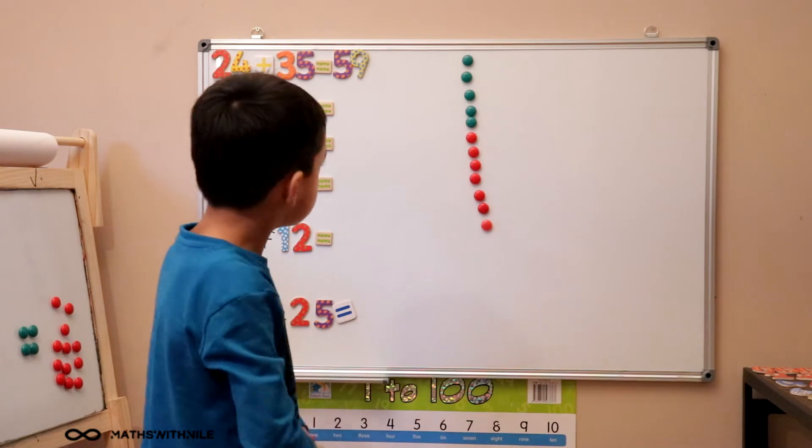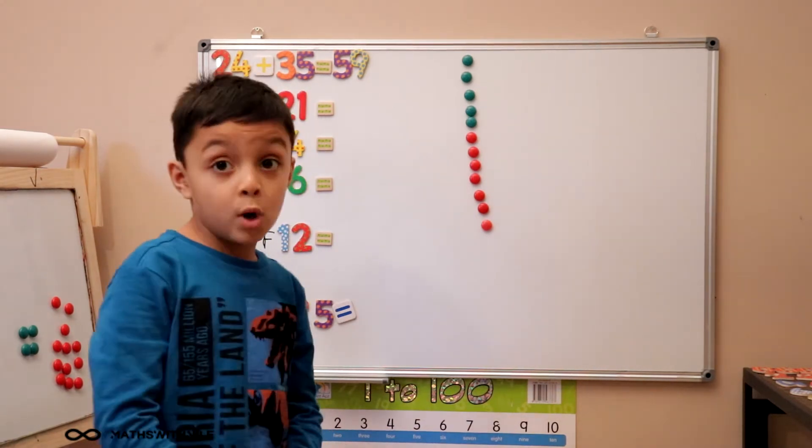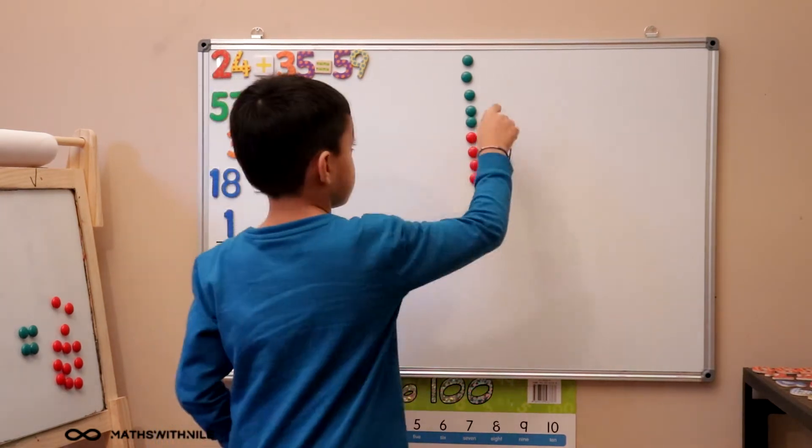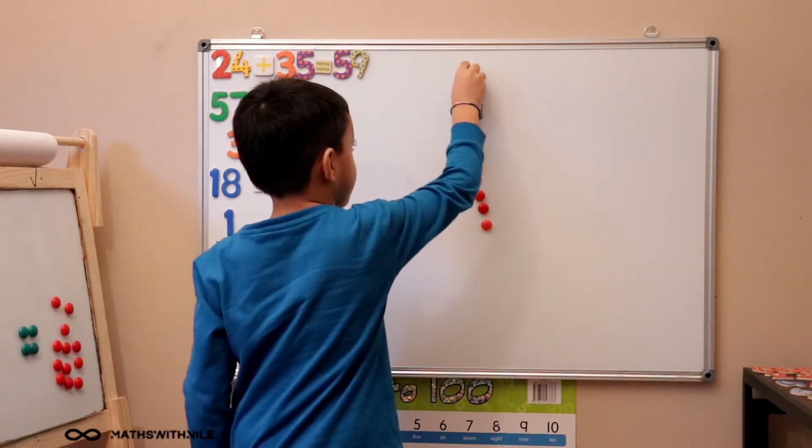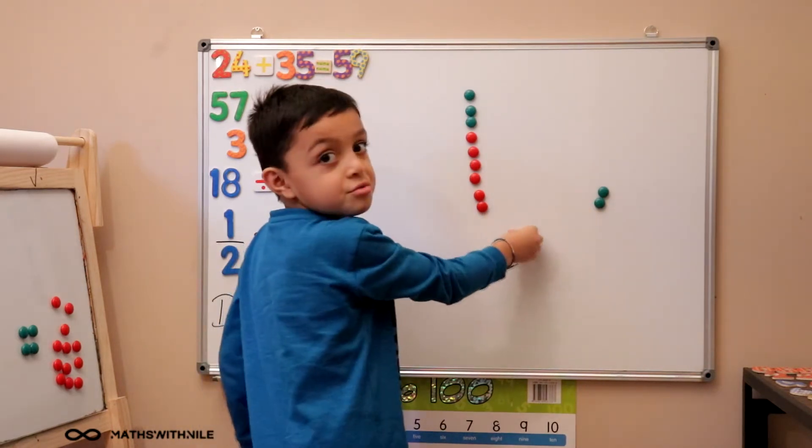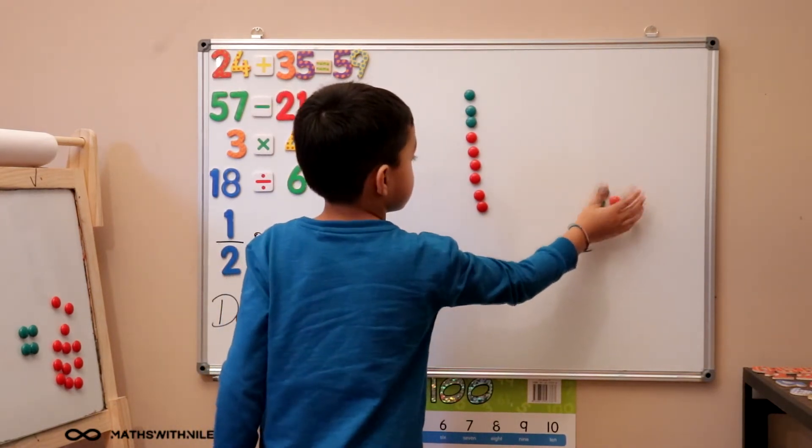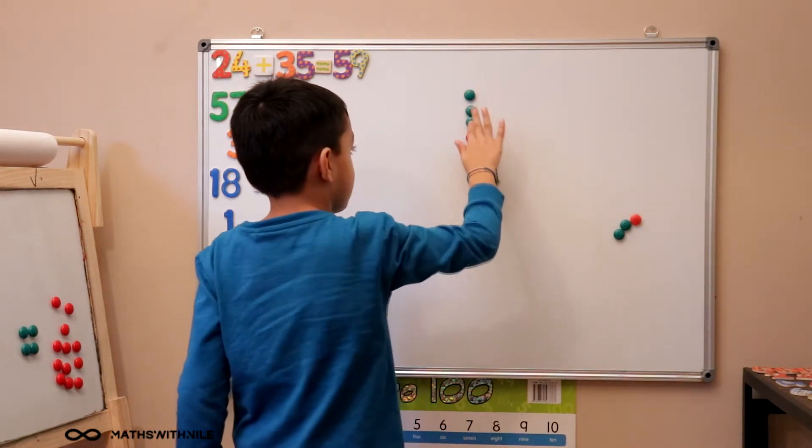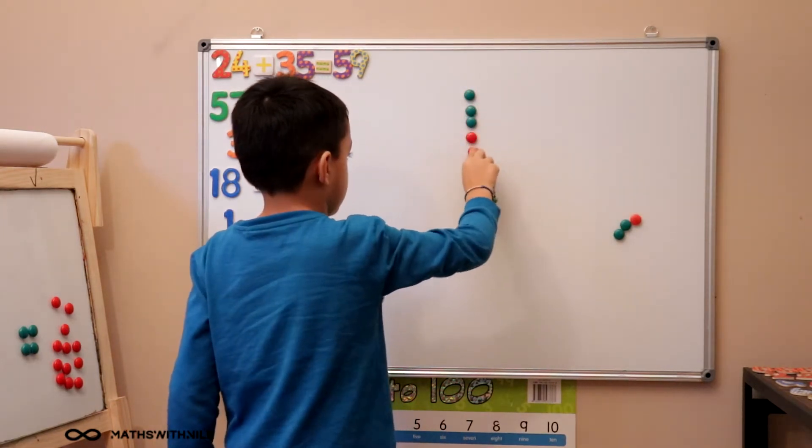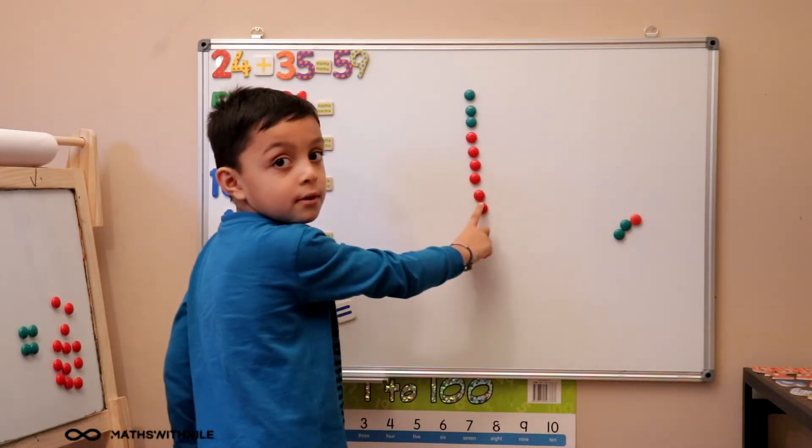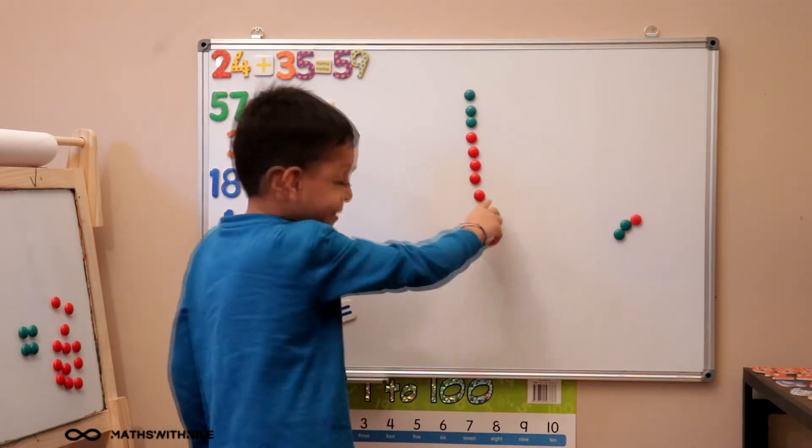What's the question asking us to do? Take away. Take away how many? 21. So can you count out 21? 10, 20, 1. Okay. You can put it to the side. And now can you count how many you've got left? 10, 20, 30, 31, 32, 33, 34, 35, 36. 36. Very good.